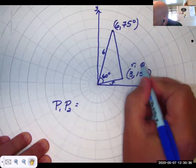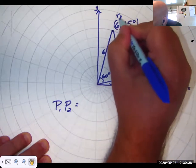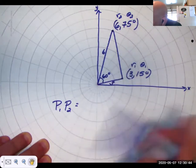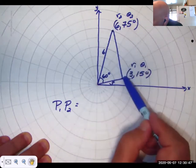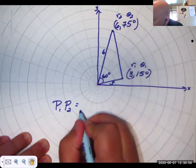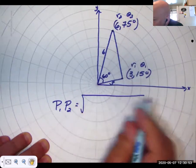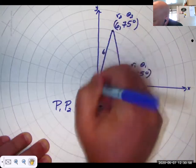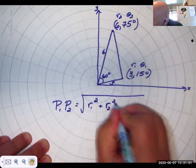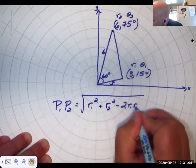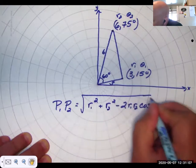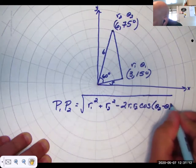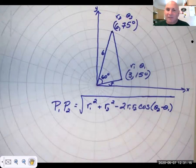The distance is, we're just going to use the law of cosines here to get this side. That distance will be the square root of a squared or r1 squared plus b squared, which is r2 squared, minus 2ab cosine c. Very easy.